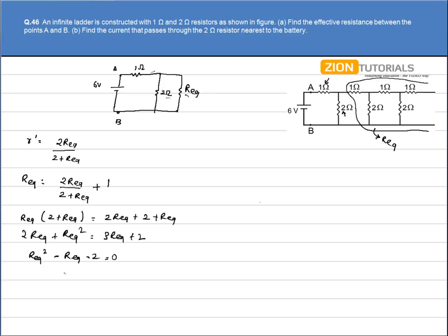Now in solving this quadratic equation for R equivalent, I get the value of R equivalent as 2 ohm. That is my answer for the first part. In second part, I have to calculate the current that passes through the 2 ohm resistor. So I will apply Ohm's law that is V is equal to IR to calculate the net current flowing.